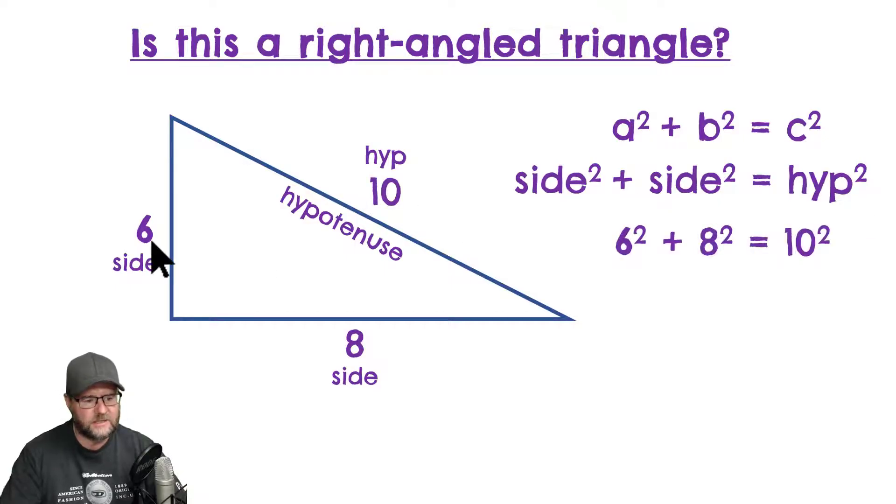One of our sides is six, so I'm going to do six squared. The other short side, the other side was eight, so eight squared, equals the hypotenuse, in this case, 10 squared. If those two things are true, if this side does actually equal this side, then it is a right angle triangle, because in a right angle triangle, this rule has to apply.